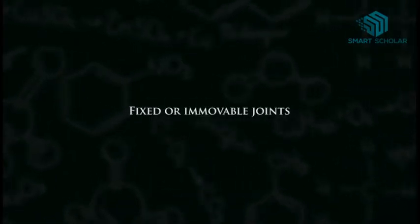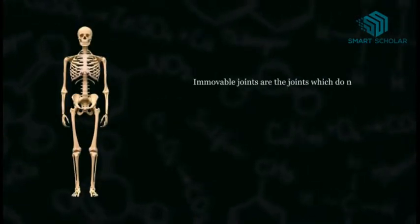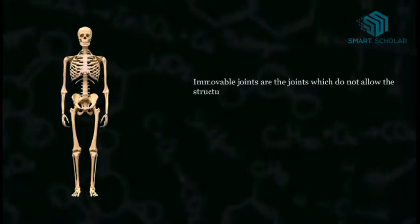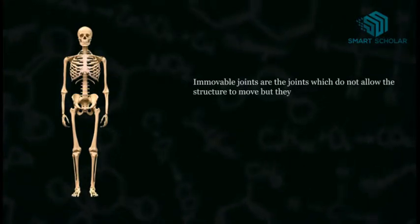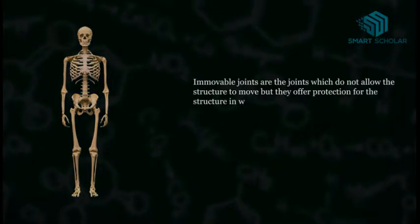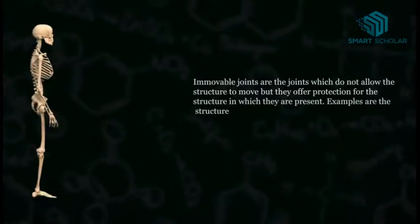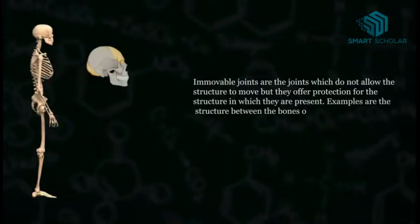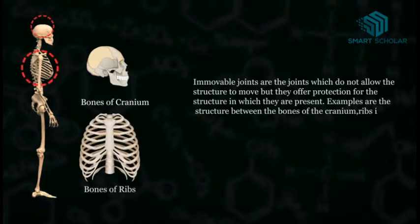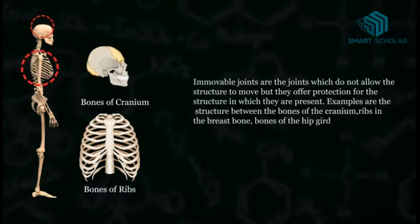Immovable joints are joints which do not allow the structure to move, but they offer protection for the structure in which they are present. Examples are the structures between the bones of the cranium, ribs and the breastbone, and bones of the hip girdle.